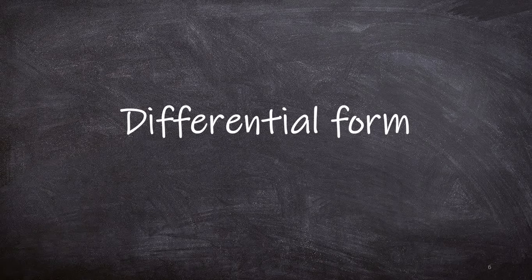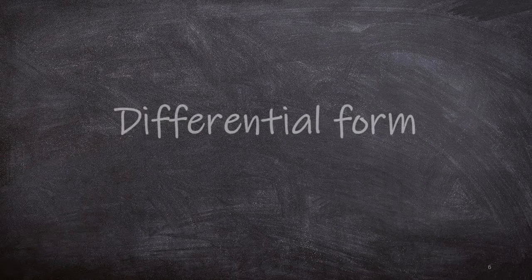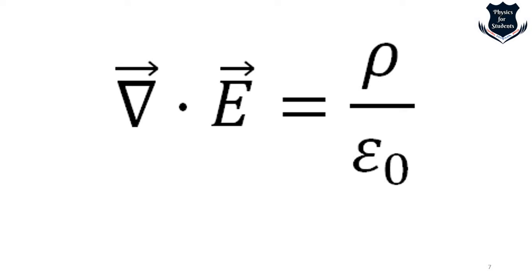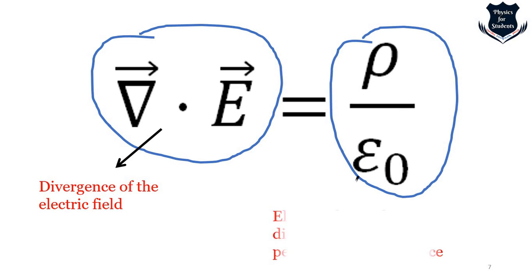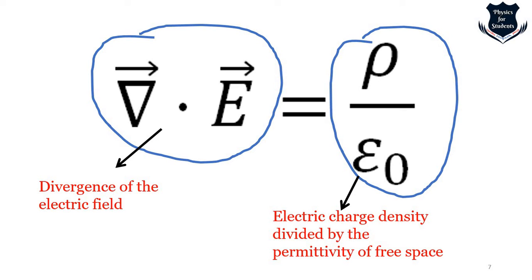Now when we talk of the differential form, it says that electric charge produces an electric field, and the flux of that field passing through any closed surface is proportional to the total charge — that is the integral form. The differential form's left-hand side says the divergence of the electric field, and the right-hand side denotes the electric charge density divided by the permittivity of free space.